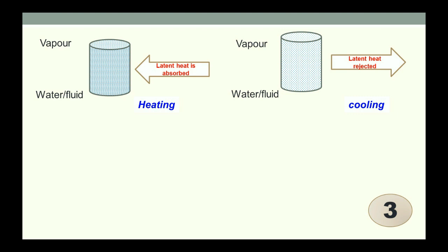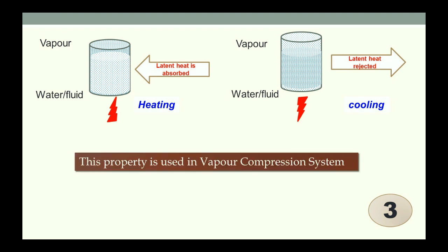The third concept is latent heat. We know that when sensible heat is supplied to water, it starts boiling, and when latent heat is supplied, there is a phase transformation from liquid to vapor. Similarly, when latent heat is taken out of the vapor, phase transformation takes place from vapor to liquid. This property is also used in vapor compression system.